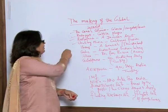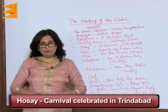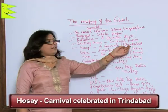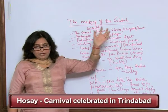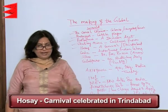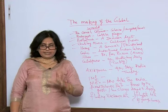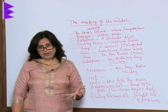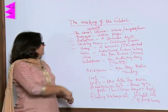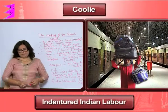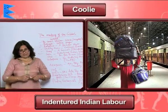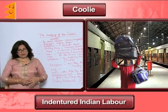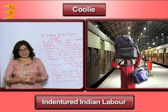Next is 'Hosay' — a carnival celebrated in Trinidad where people from different sects, religions, and segments came together and celebrated it. Next is 'kuli.' Kuli is a word we all understand in India. A kuli is a kind of indentured laborer who does not have any rights.